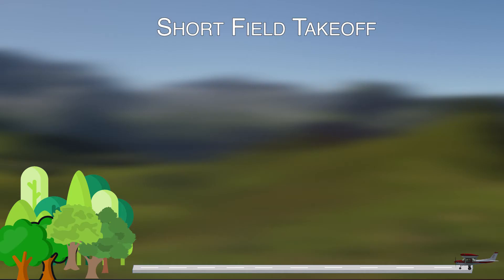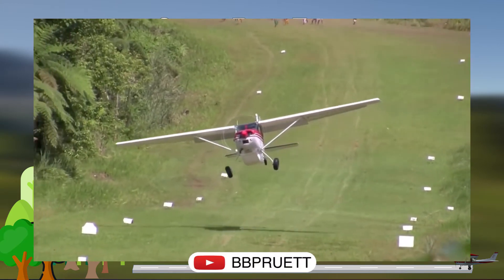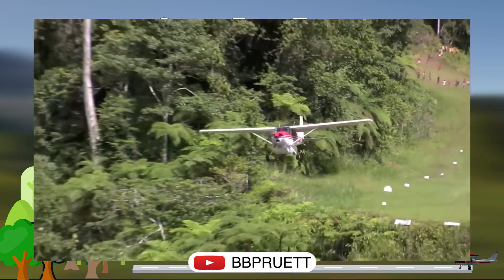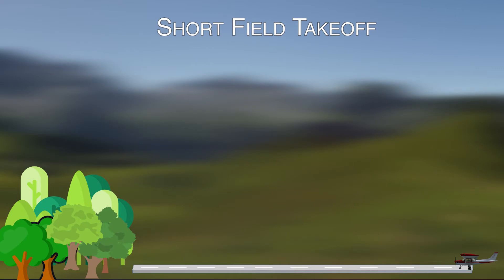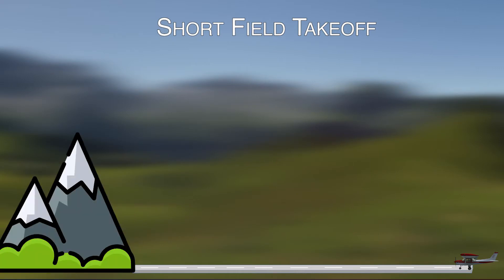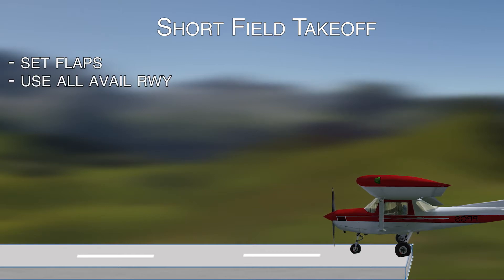A short field takeoff is basically pushing the airplane to its maximum performance. It's one of the more difficult maneuvers where you need precise inputs to do it properly and safely. The reason for a short field is, as you can probably guess, it's a short field. You might also have some obstacles to climb over, or it might be a one-way-in, one-way-out strip where your effective runway length is reduced when you take off with a tailwind. You set the flaps to whatever the POH recommends and you use as much runway as you can — back taxi if you have to, use every inch of that runway.